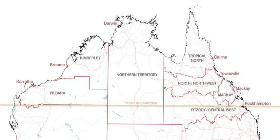Further north, maxima are consistently around 32 degrees Celsius but extreme humidity makes conditions very unpleasant. On the coast, maxima in January range from 29 degrees Celsius in the south to 32 degrees Celsius, with minima generally around 21 degrees Celsius. In July, temperatures show a wider range, from 31 degrees Celsius in the north to around 19 degrees Celsius in the south, where minima can be as low as 5 degrees Celsius in Alice Springs in June and July.